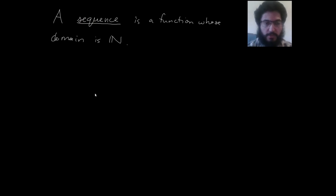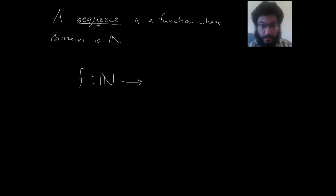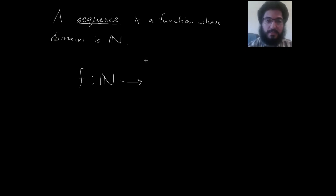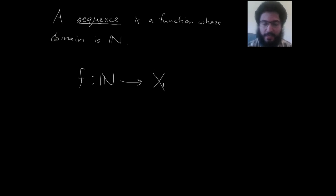Typically to describe a sequence, you would just list the outputs corresponding to the inputs zero, one, etc., respectively. The word 'sequence' is all about the domain — when someone says it's a sequence, they're telling you it's a function with domain ℕ. If someone says it's a sequence of blahs, then that tells you about the codomain. So a sequence of real numbers puts the reals here; a sequence of natural numbers puts ℕ here; a sequence of elements of a set X puts X here.